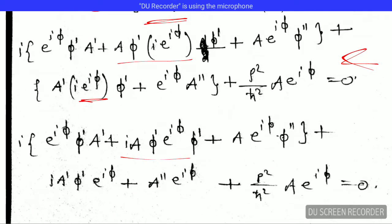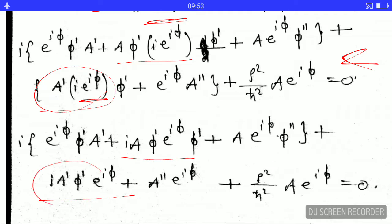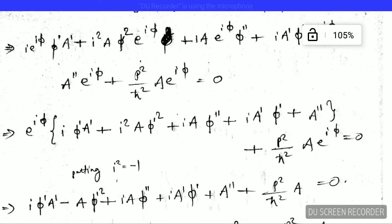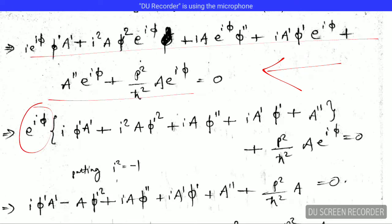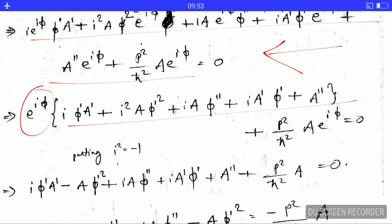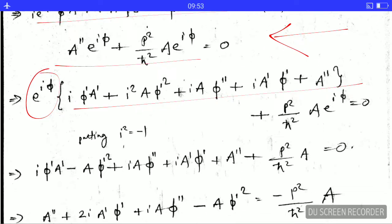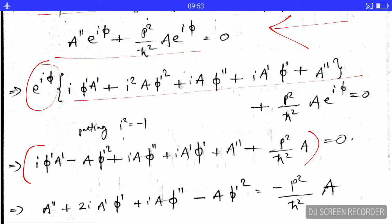Now I rearrange the equation. I also substitute i² = −1, so the equation becomes this form. I bring one term to the right-hand side, and then further rearrange by separating the real part and the imaginary part.